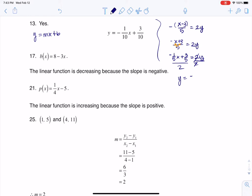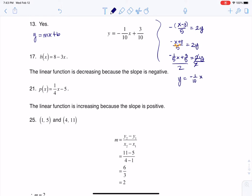So then I have over here negative 1 tenth x because negative 1 fifth divided by 2 is negative 1 tenth and then if we have 3 fifths divided by 2 that's going to be plus 3 tenths and if we take a look at that sure enough that is of the form mx plus b so yes it is a linear function.